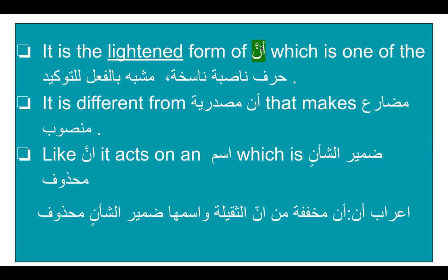When you take away one noon from Anna it becomes An al-Mukhaffafah. This An, though spelled like An-Nasturiyah, does not make mudare' mansoub — it is different from An-Masturiyah. Like Anna, it acts on an ism, which is the Damir al-Sha'n (Mirushan) and it is always Mahzouf. Just as Anna has its ism, this An al-Mukhaffafah also has its ism, but it is always the Mirushan and always Mahzouf.